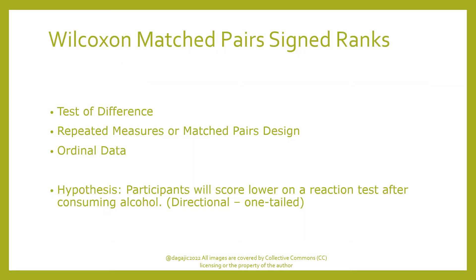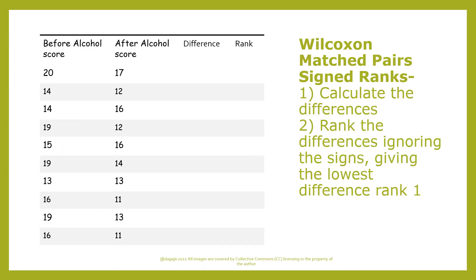In this case, we're going to test the hypothesis that participants will score lower on a reaction test after consuming alcohol, which is a directional or one-tailed test. That will become really important when we've got our calculated value and we need to look it up in our critical value tables — we need to know if it's one or two-tailed, directional or non-directional.